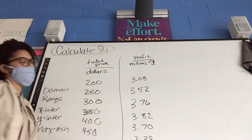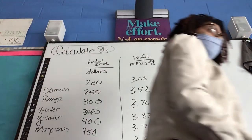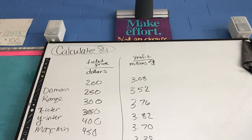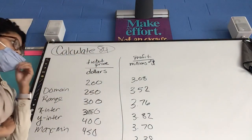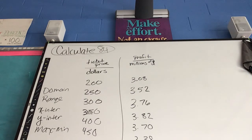Minimum and maximum. So, this is my data. Describe my maximum. Someone describe my maximum for this data. Let me read them out loud. 3.08, 3.52, 3.76, 3.82, 3.70, 3.38. Which one's my maximum? 3.82.